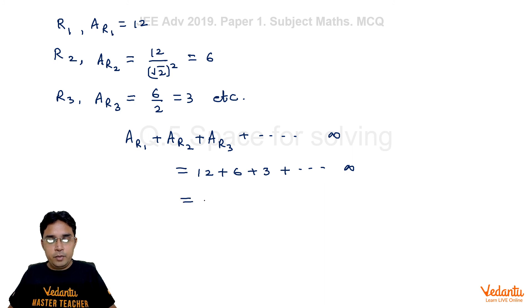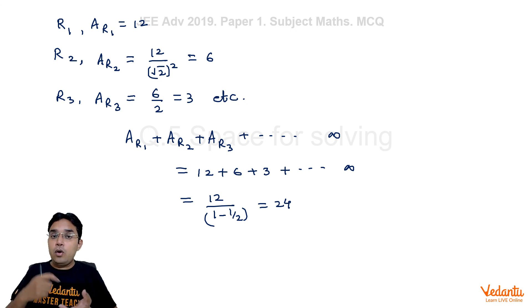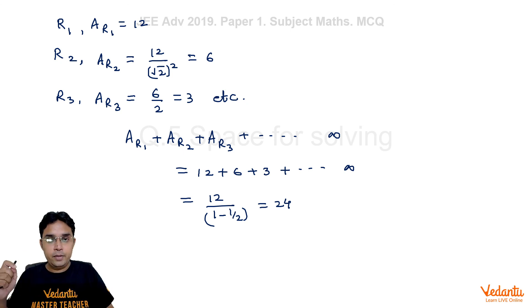This is simple GP with common ratio 1/2, first term 12. So the sum here would be 12/(1 - 1/2) which comes out to be 24. Now one very interesting thing.